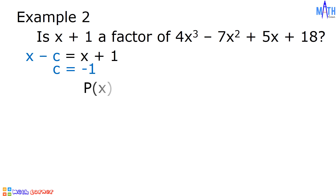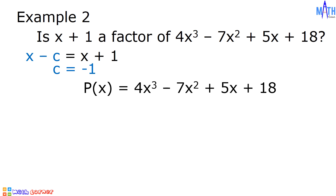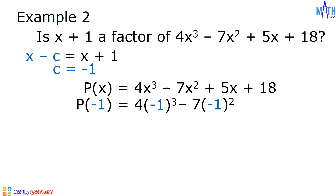Let p of x equal 4x cubed minus 7x squared plus 5x plus 18. Let us substitute negative 1 for x in this equation. p of x becomes p of negative 1. 4x cubed becomes 4 times the cube of negative 1. Minus 7x squared becomes minus 7 times the square of negative 1, plus 5 times negative 1, plus 18.